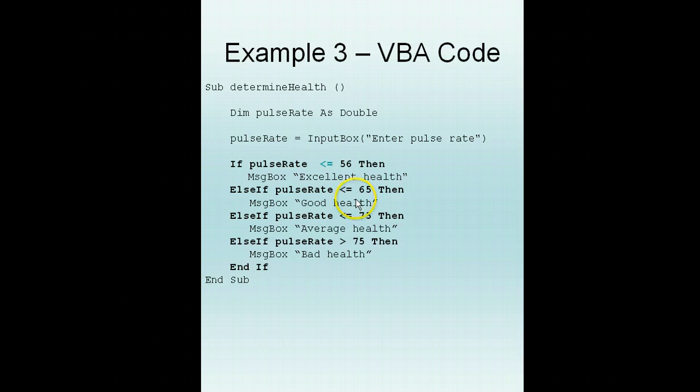Else, if pulse rate is less than or equals to 65 then good health. The reason why we can do this and that we do not have to check that it's more than 56 anymore is because anything that comes into here will be definitely more than 56. If it comes here it means that it's more than 56 and less than 65. We will go through this same example in the next one. Else if pulse rate is more than or equals to 75, we do not have to check that it's more than 65 because it's definitely more than 65, else it will not be able to come here in the first place.